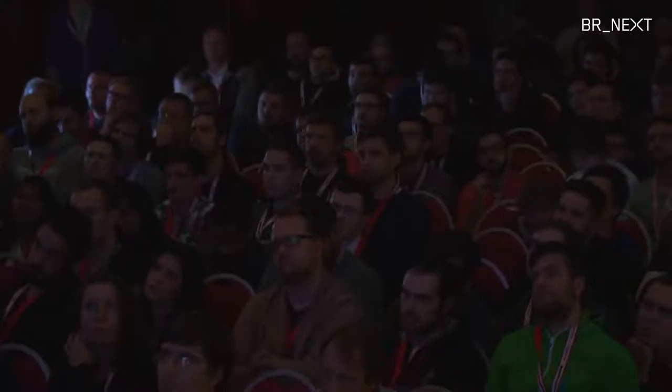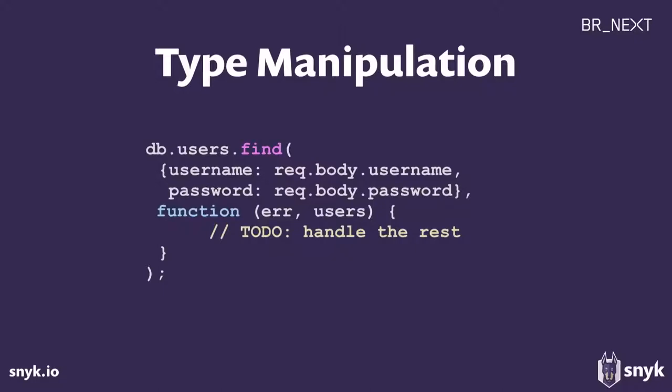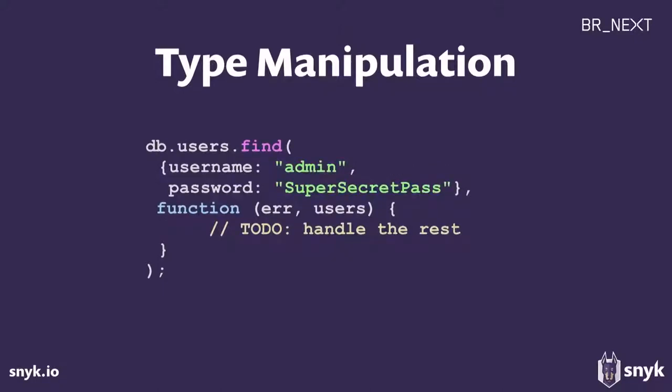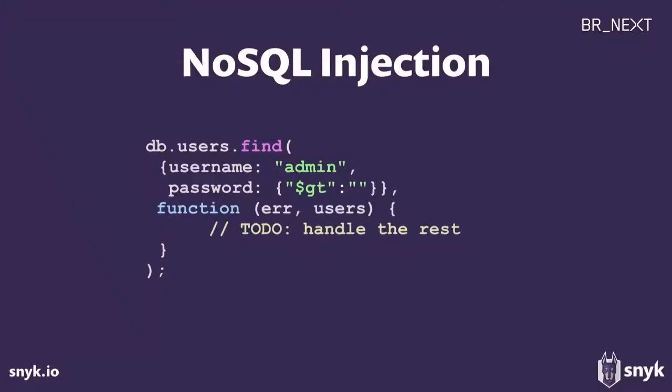As a last point: type manipulation can also be used for NoSQL injection. We've shown strings and arrays, but if you use Mongoose to find users by username and password, and an attacker can control JSON input, instead of passing a string as the password they can pass a Mongoose operator like `{$gt: ''}` — greater than nothing, which is everything. This returns all records, essentially SQL injection for MongoDB: NoSQL injection.